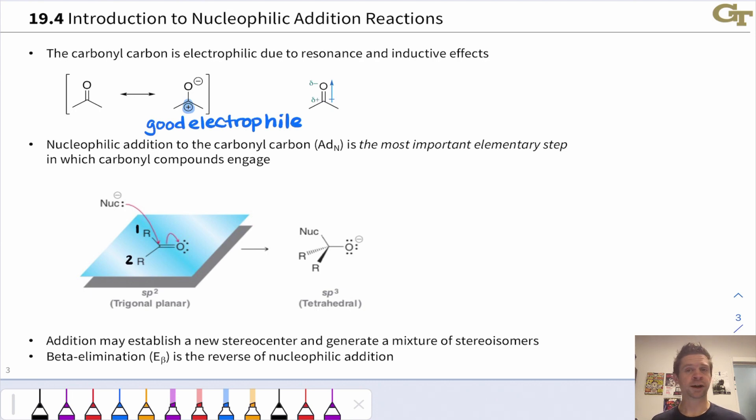Nucleophiles can add to the carbonyl group in an AD sub N elementary step. This is, without question, the most important elementary step in which carbonyl compounds engage. The electrophilicity of the carbonyl carbon is so important. The basic electron flow is shown in this figure below.